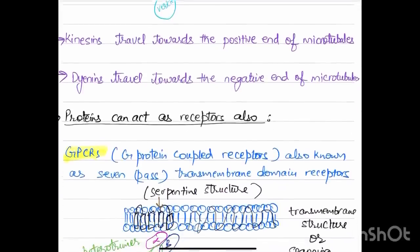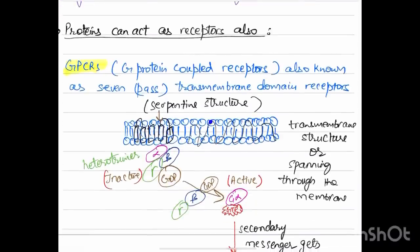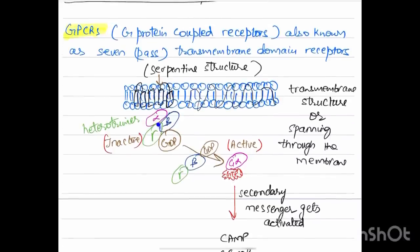Proteins can also act as receptors. GPCRs, G protein-coupled receptors, also known as seven-pass transmembrane domain receptors. This is the structure of a G protein. It's a transmembrane structure that spans through the membrane. It has a serpentine structure because it passes through the membrane seven times.